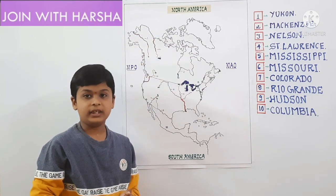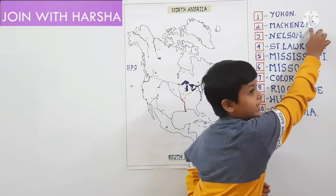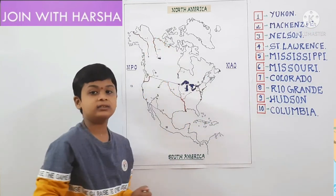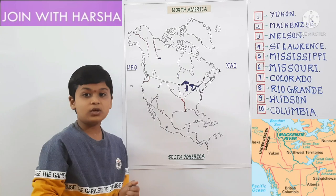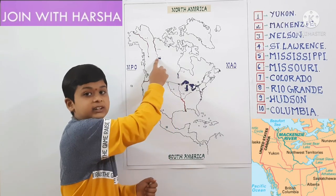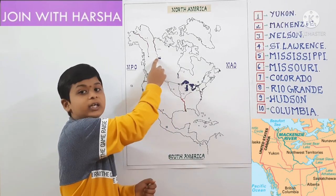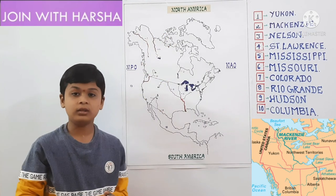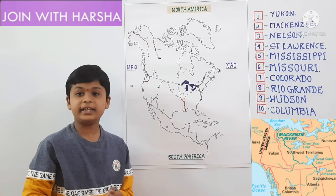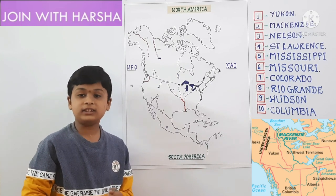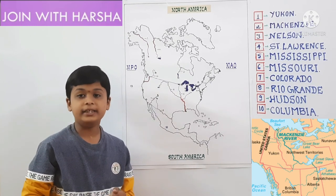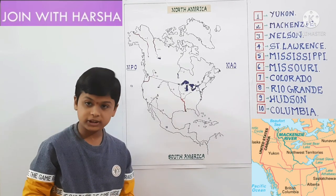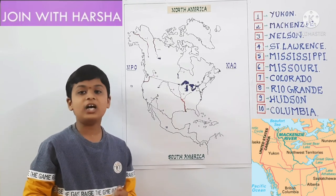Second one is Mackenzie River. Mackenzie River source is Lake Great Slave. It flows towards North and drains in the Arctic Ocean. Mackenzie River is the longest river in Canada and the longest river flowing into the Arctic Ocean from North America continent.